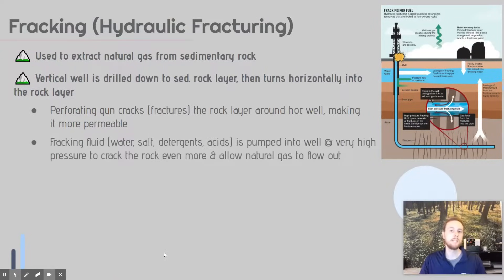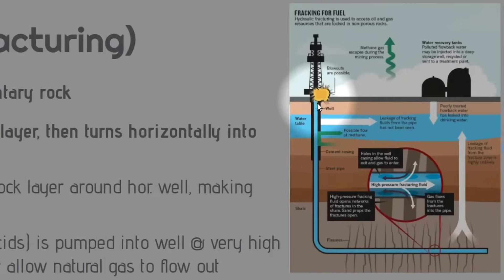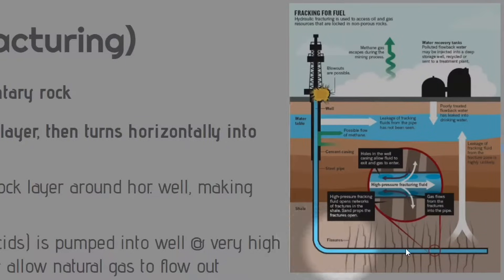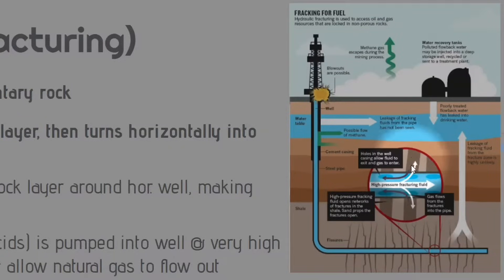The natural gas is then collected in a pipe that carries it up to the surface. Zooming in on the diagram: a vertical well is drilled down, then turns horizontally; fissures are created by the perforating gun shooting spikes into the rock; water is pumped in at high pressure to crack or fracture the rock; and the natural gas trapped there flows out of the cracked sedimentary rock into the pipe, back up to the surface where it can be collected.